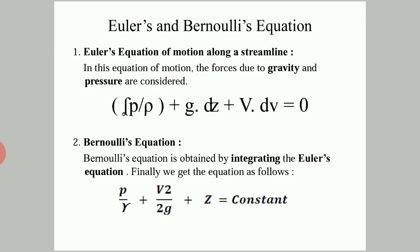Next is Euler's equation and Bernoulli's equation. Euler's equation of motion is along a streamline, and in this equation only gravity and pressure forces are considered. As we have seen, whenever only these two forces are considered, it is known as Euler's equation of motion. The final form of Euler's equation is: dP/ρ + g·dZ + V·dV = 0.